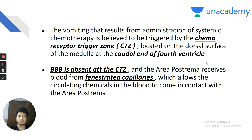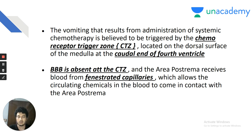The vomiting from systemic chemotherapy is triggered by the chemoreceptor trigger zone, located on the dorsal surface at the caudal end of the medulla at the fourth ventricle. The blood-brain barrier is absent at the chemoreceptor trigger zone — this is a very important point. The drug enters via fenestrated capillaries, allowing circulating chemicals in the blood to come into contact with the area postrema.